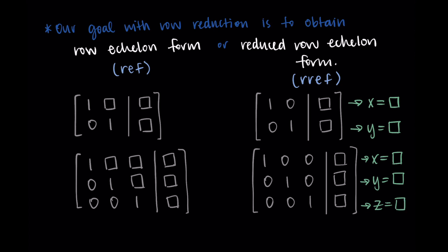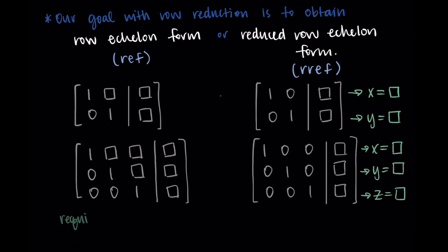We prefer reduced row echelon form because it has the solutions that we can read right off. But row echelon form is nice too, if you happen to get there, because all that it requires is back substitution. You can see on the last row, we're given one of the solutions. So in the two dimensional case, it's y equals something, or in the three dimensional z equals something. And then you have one solution that you can back substitute to the rest of the equations.